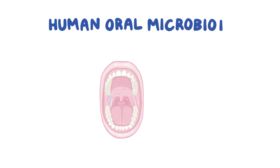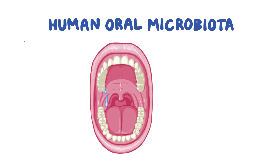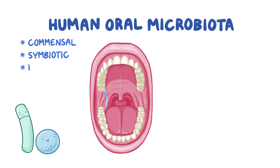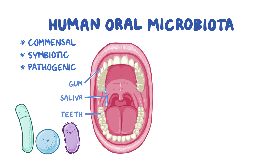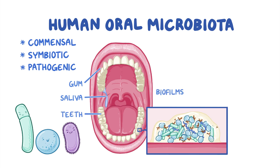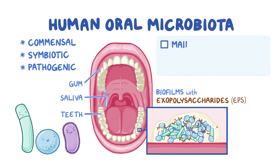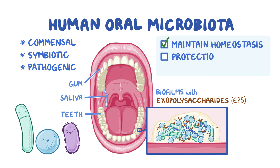The human oral microbiota is represented by the community of commensal, symbiotic and pathogenic microorganisms which are normally found in the oral cavity. The oral microbiota is found in saliva, the surface of gum tissue and teeth, and in biofilms — basically layers of goop-like material made of exopolysaccharides or EPS, within which bacteria survive in a quiescent or slow-growing state. These microbes play an important role in maintaining oral homeostasis, protecting the oral cavity and preventing disease development.